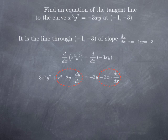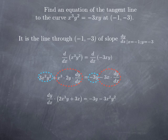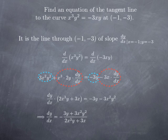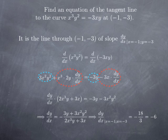Solving for dy over dx, I collect the terms containing dy/dx on the left-hand side, obtaining dy/dx multiplied by (2x cubed y plus 3x). On the right-hand side, I have negative 3y minus 3x squared y squared. Dividing both sides by the factor in front of dy/dx gives the expression for dy over dx. Plugging in x equals negative 1 and y equals negative 3, what we obtain is negative 8 thirds — in other words, negative 6.